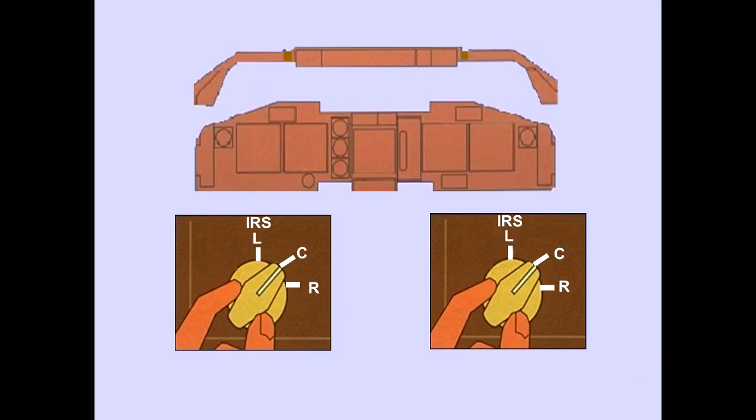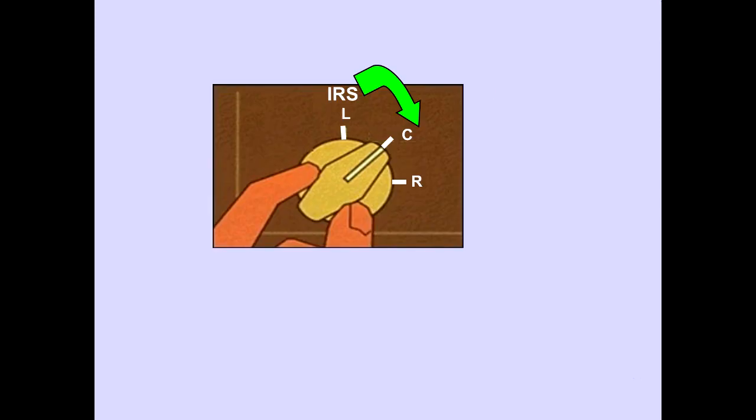The IRS source selectors are located on the forward panel. With the faulty left IRS, selecting the center IRS would restore the captain's instruments to normal operation.